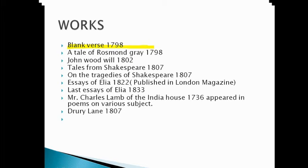This whole list shows Charles Lamb's works — please take a screenshot. The important works to note are: Tales from Shakespeare, written in collaboration with Mary Lamb, and On the Tragedies of Shakespeare, written in 1807. These two works related to Shakespeare are important because Charles Lamb greatly admired Shakespeare.